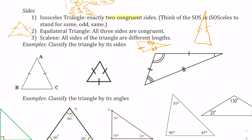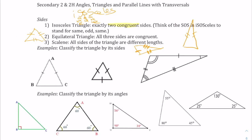If we're going to classify these triangles, the first set of instructions says to classify by their sides. Since this one has two congruent sides, this one will be isosceles. This has three congruent sides, so this will be equilateral — lateral is with sides. And then this one, where each side is different, would be scalene.